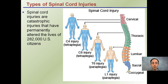Spinal cord injuries are catastrophic injuries that may permanently alter the lives of about 282,000 U.S. citizens. Depending on where the spinal cord injury occurs determines what portion of the body becomes paralyzed. The key take-home message is: the further up the damage occurs, the greater the portion of the body that becomes affected. An injury in the lower region may affect just the legs, while an injury toward the cervical vertebrae region results in a much larger portion becoming paralyzed.